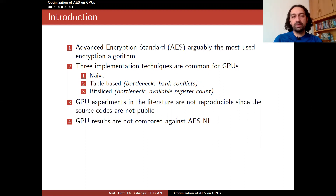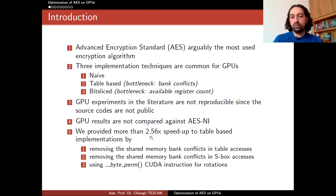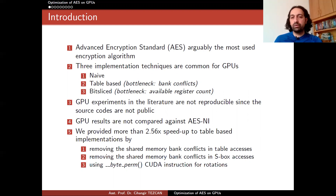In this work, we removed the bank conflicts in table-based optimizations, which provided more than 2.56x speedup. We also compared our results with CPUs that have hardware-level instruction sets. Additionally, we made our implementation publicly available so that everybody can reproduce the same results, or use them in future optimizations, or compare their results with ours.